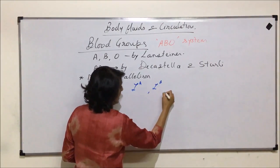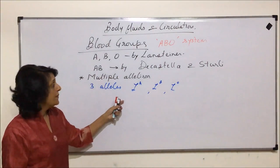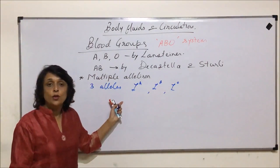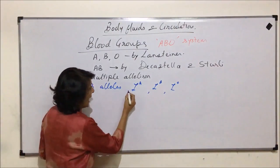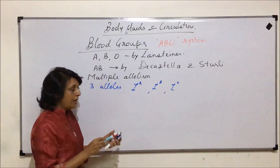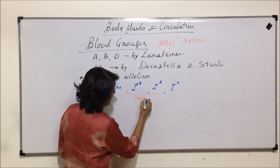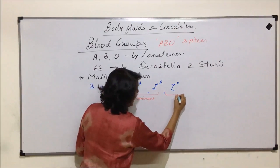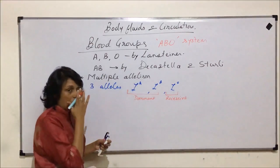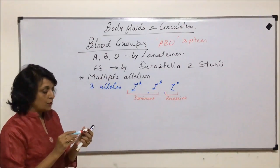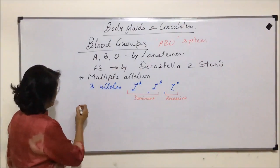In the ABO system, there are three alleles, written as IA, IB, and IO. Every individual would have only two out of these three alleles. Out of these three, two are dominant — IA and IB — and IO is recessive. So there are three alleles which control or are responsible for our blood groups.